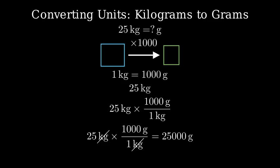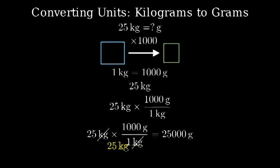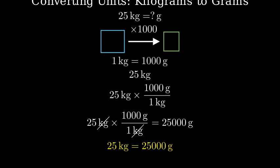Now let's multiply the numbers. Twenty-five times one thousand equals twenty-five thousand. Therefore, twenty-five kilograms equals twenty-five thousand grams.